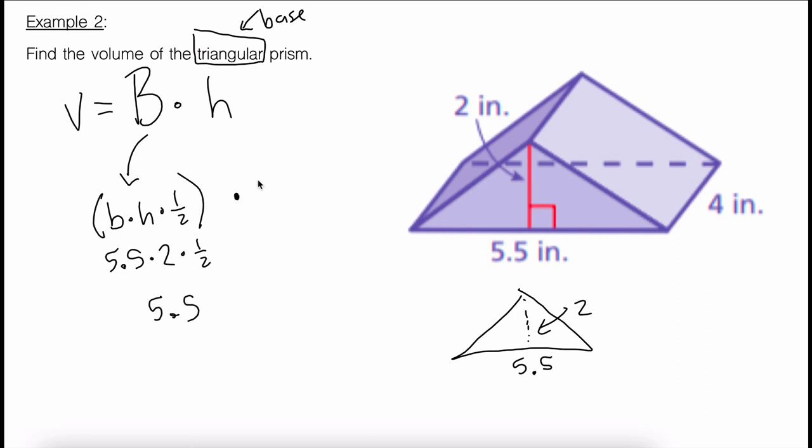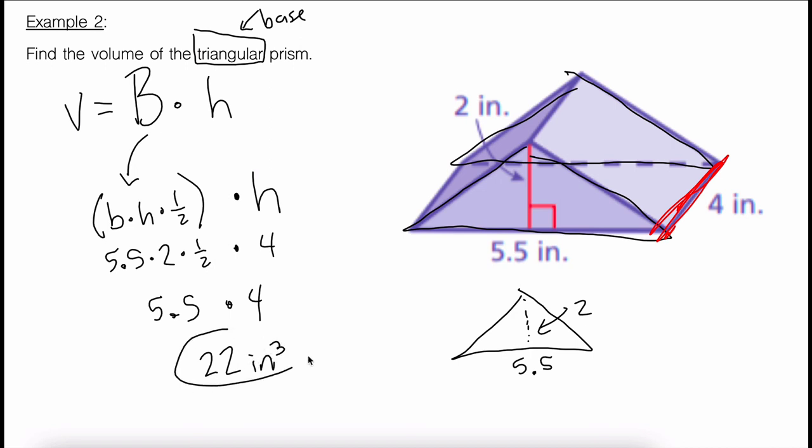Second step is then multiply that by the height of the actual prism. Height runs from one base to the other base, so the base that's in the back there. What's the distance that connects those two bases? That would be this distance right here. That goes from one base to the other, and that's 4. So this would be times 4. And then my final volume will be 22 inches cubed, cubic inches.